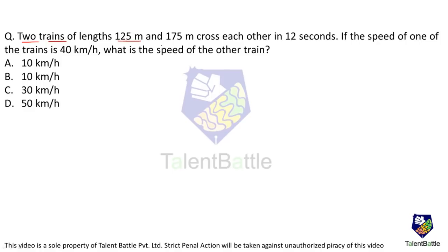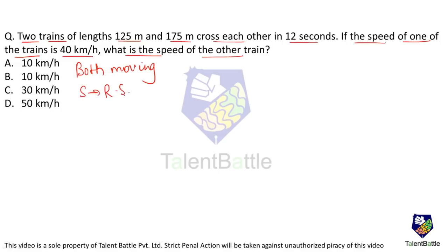Two trains of lengths 125 meters and 175 meters cross each other in 12 seconds. If the speed of one train is 40 km/h, what is the speed of the other train? Since both trains are moving, we use relative speed. The formula is: speed = distance / time.